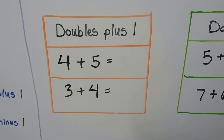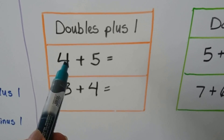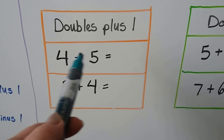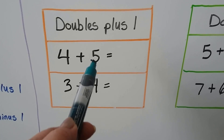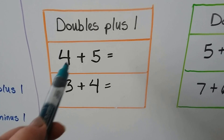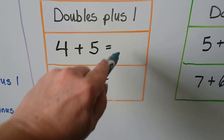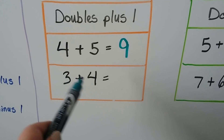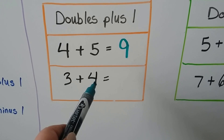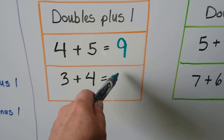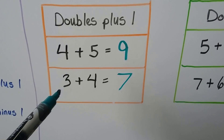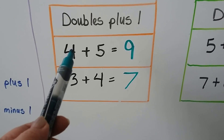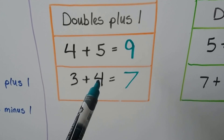For doubles plus one, the number is just one more than the double. We would use the doubles four plus four, and five is one more, so that's a doubles plus one. Four plus four is equal to eight, so four plus five must equal nine. Three plus three is equal to six, so three plus four must be one more than six — it must be seven. For the doubles plus one, this addend is one more: we have four and one more is five, three and one more is four.